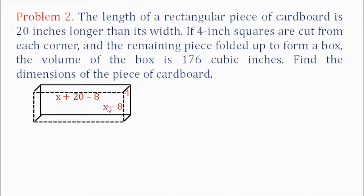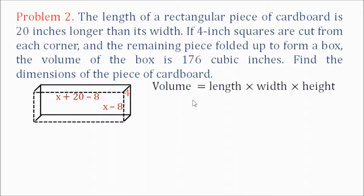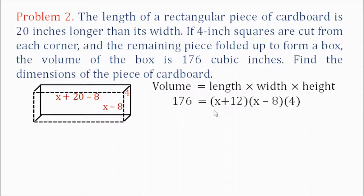To find the volume of this box, we use the formula length times width times height. But the volume has already been given as 176. So our equation is 176 equals the length, which is x plus 12, times the width, which is x minus 8, times the height, which is 4. We simplified x plus 20 minus 8 to get x plus 12.